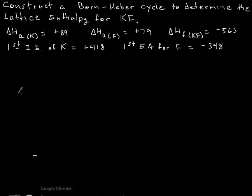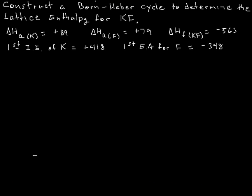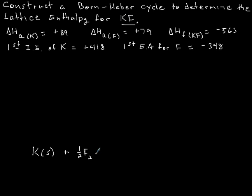All the cycles work the same way, so if you learn this basic idea, you are going to know how to do a Born-Haber cycle for any particular substance. You're going to begin with the elements — potassium and fluorine — in their standard states. Potassium is going to be in the solid state, and you're going to begin with one half of F₂ in the gaseous state, because we just need one half to make potassium fluoride.